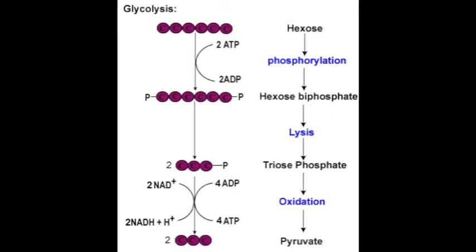The NAD+ is reduced to become NADH through this process. For both pyruvates, four ATP are created, two NADH, and two pyruvates. These two pyruvates will then go into the bridge step, then to the Krebs cycle. Two NADH will eventually be transported into the ETS, or the electron transport system, which we will discuss later. The four ATP is used as energy or energy storage.